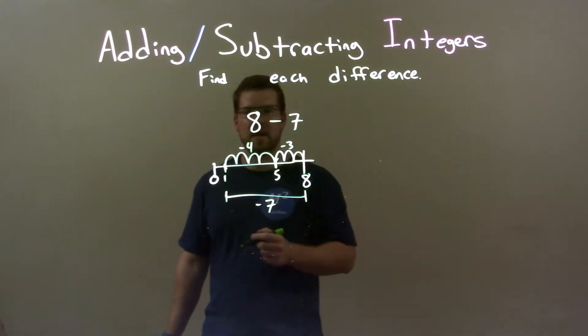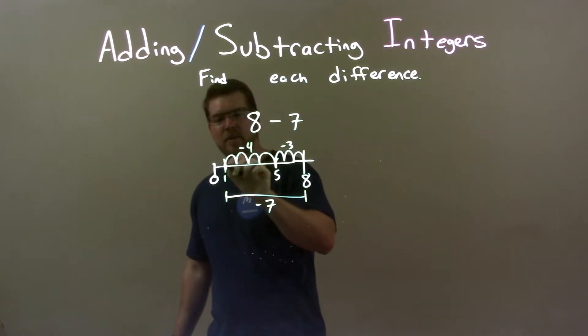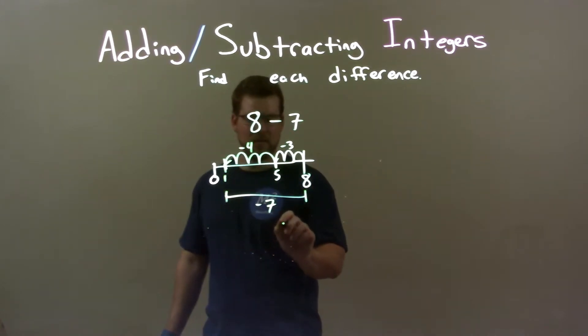So we have negative 4 plus negative 3, gets me to negative 7. And so we ended right here at positive 1. So our answer is just good old-fashioned 1.